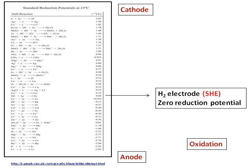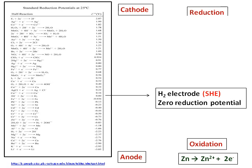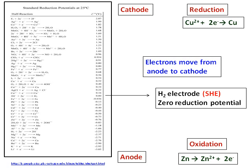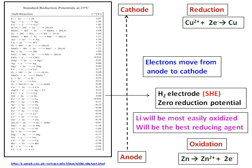Anode is oxidation, cathode is reduction, and the corresponding reactions are shown. Since electrons are produced at the anode, they will flow from anode to cathode. Because of the negative values at the bottom, those species will prefer to get oxidized and will act as the best reducing agent.